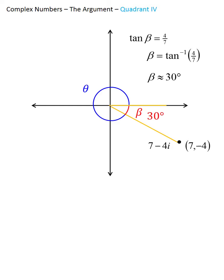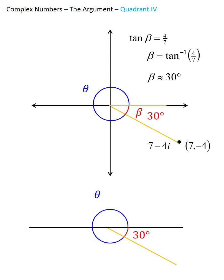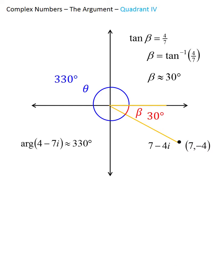We now know beta is about 30 degrees, but we want the argument, which is theta. The blue and red angles combined make a full circle, so theta + 30 = 360. Subtracting gives theta = 330 degrees, which is the argument of the complex number 7-4i. That concludes the lesson.